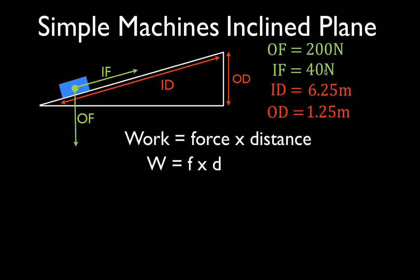Work is force times distance. Now, you'll notice we have two forces and two distances, so there's two different ways to calculate the work. We can calculate the work by multiplying the output force times the output distance, and we can also calculate the work by multiplying the input force times the input distance.